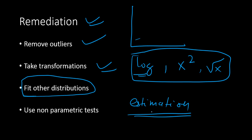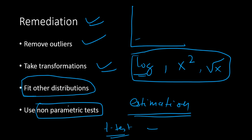Instead of parametric tests — which assume a theoretical distribution like the normal distribution — you can go ahead with non-parametric tests. A non-parametric test does not assume any theoretical distribution. So you can use non-parametric tests in that case.